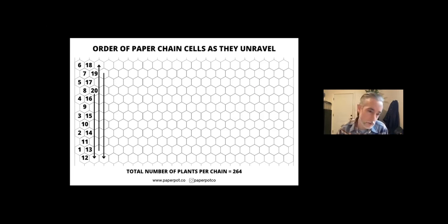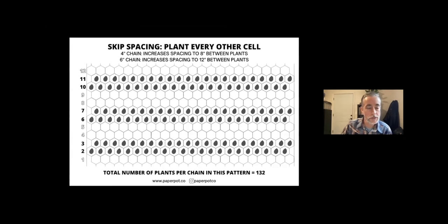On our website we have some really nice graphs here that can help you get a good visual understanding of how the cells in the paper chain are laid out, so that you can understand how you need to seed the tray in order to get every other cell. Here's another great one that shows you exactly where the seeds need to go to achieve every other cell spacing. This is for the 4 inch or 6 inch chain—they're both the same in terms of how you seed them.